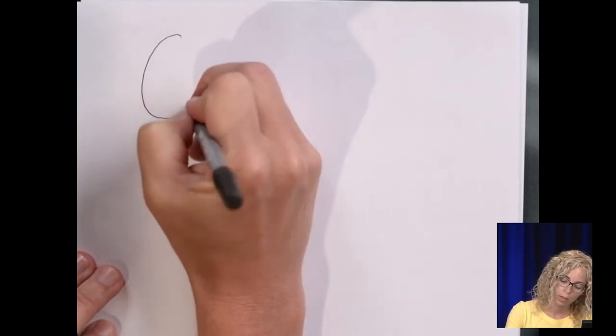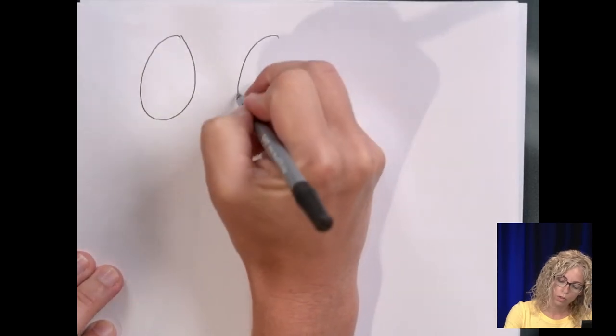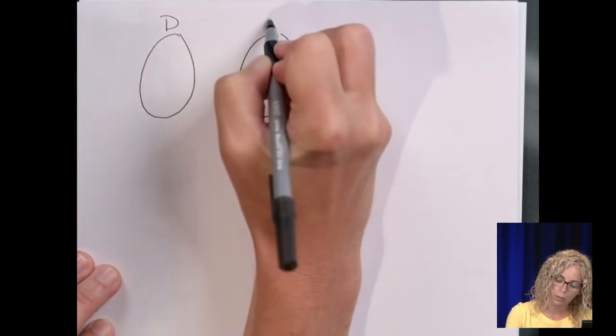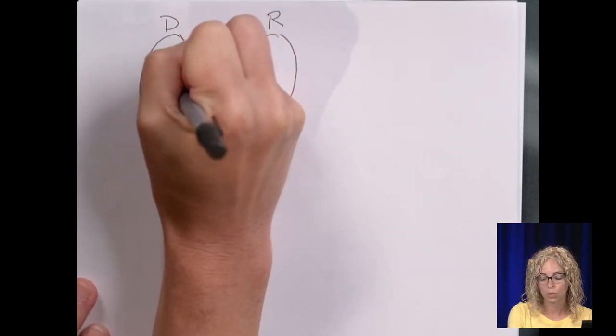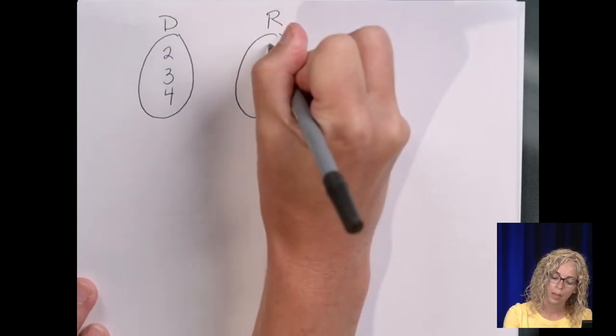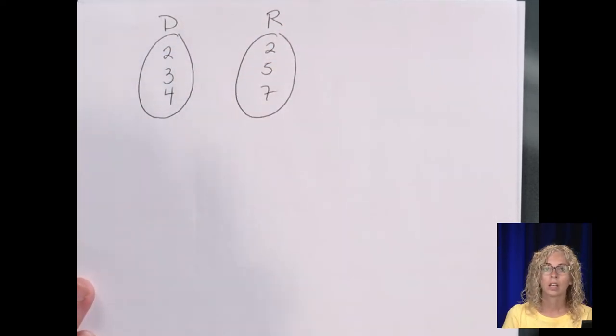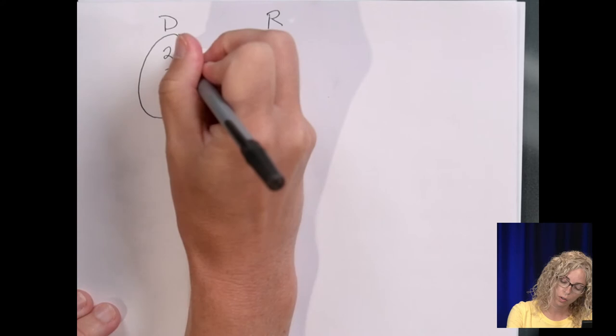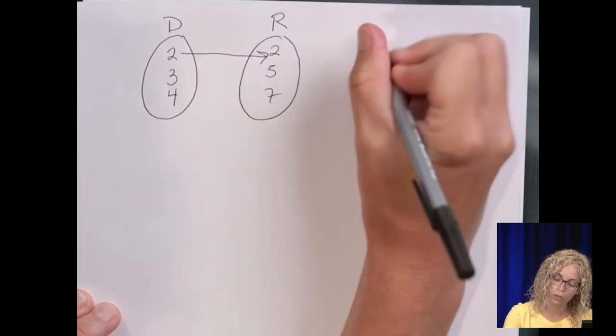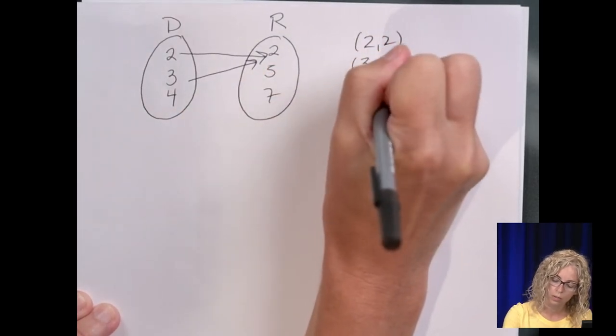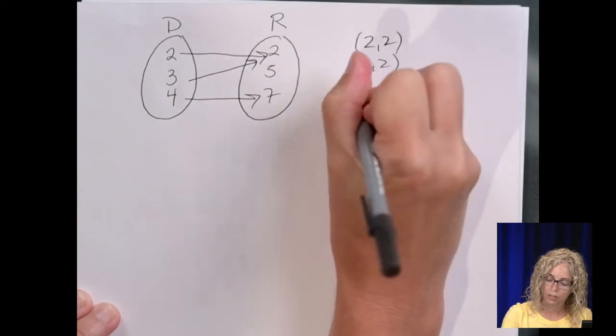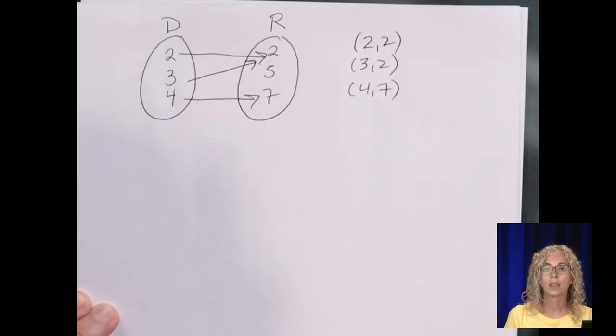So we may see that in terms of points, in terms of a graph. We also have a mapping diagram. So it's two circles with your domain on the left, so we use D and R for range. Say we have a domain of {2, 3, 4} and then range {2, 5, 7}. As long as it's no repeating domain, because that's your x. So if I have (2,2), (3,2), and (4,7), this is a function.